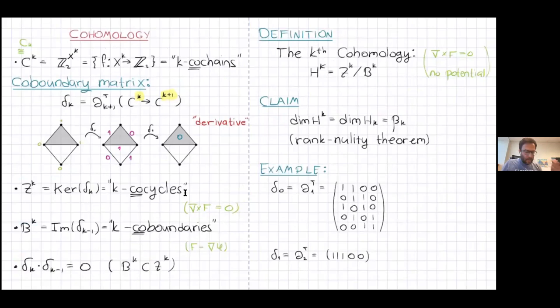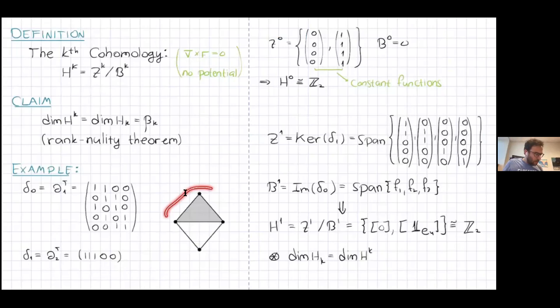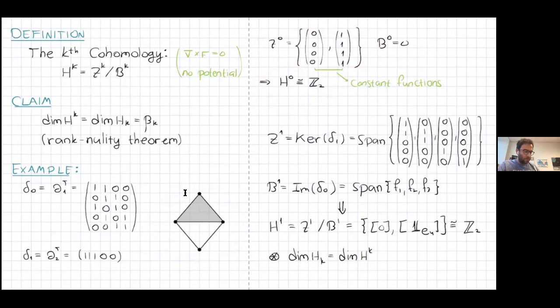Quickly looking at the cohomology of the same example: the zeroth cohomology is the space of piecewise constant functions on vertices — like the example I started with on graphs. In this example, the space is one-dimensional because the only piecewise constant non-zero function is the all-ones function. So the dimension is one, matching beta_0.